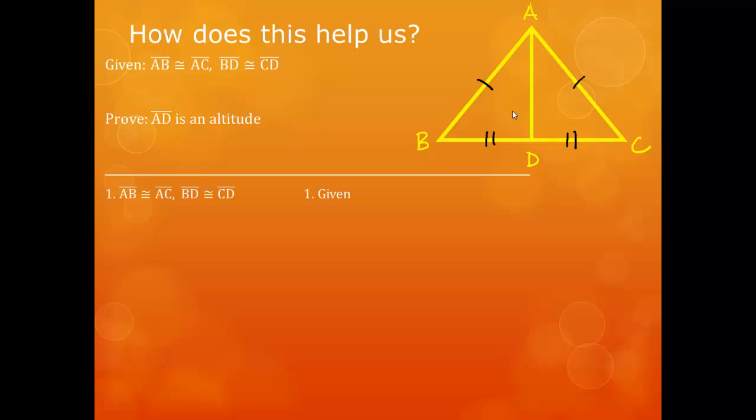So start off with your givens. AB is congruent to AC, and BD is congruent to CD, and that's a given. We can then say that segment AD is congruent to segment AD by the reflexive property. Now we can say that triangle ABD is congruent to triangle ACD by side, side, side, and it's shown in steps 1, 1, and 2.